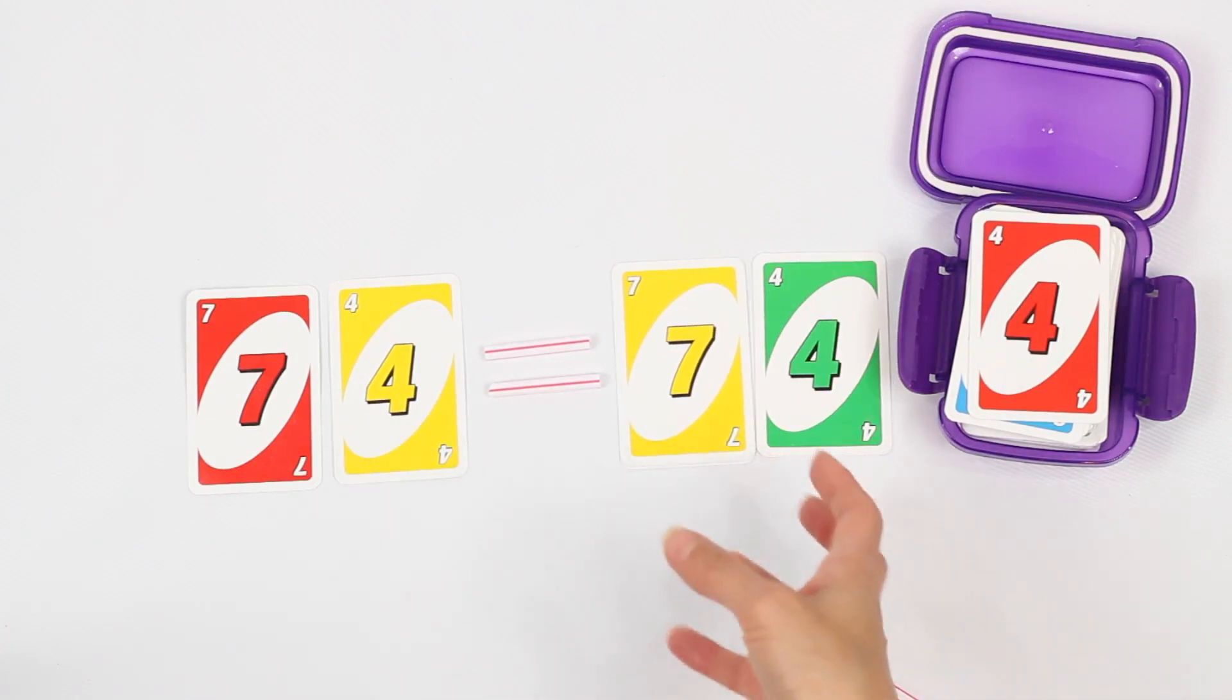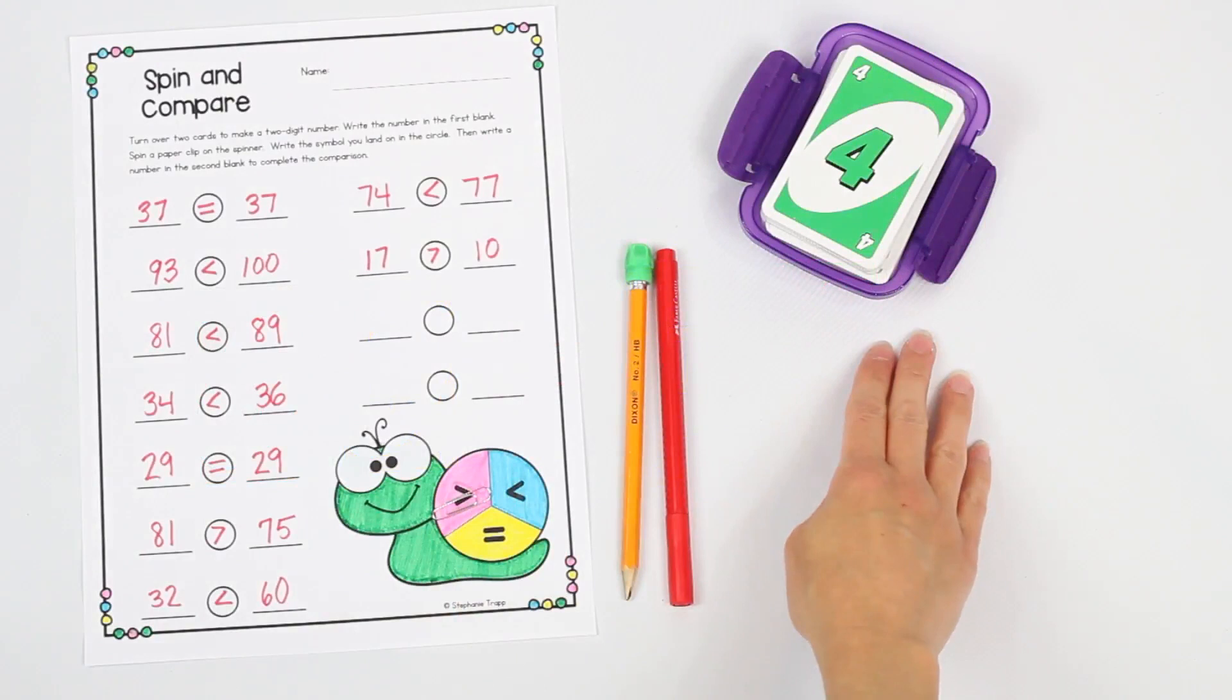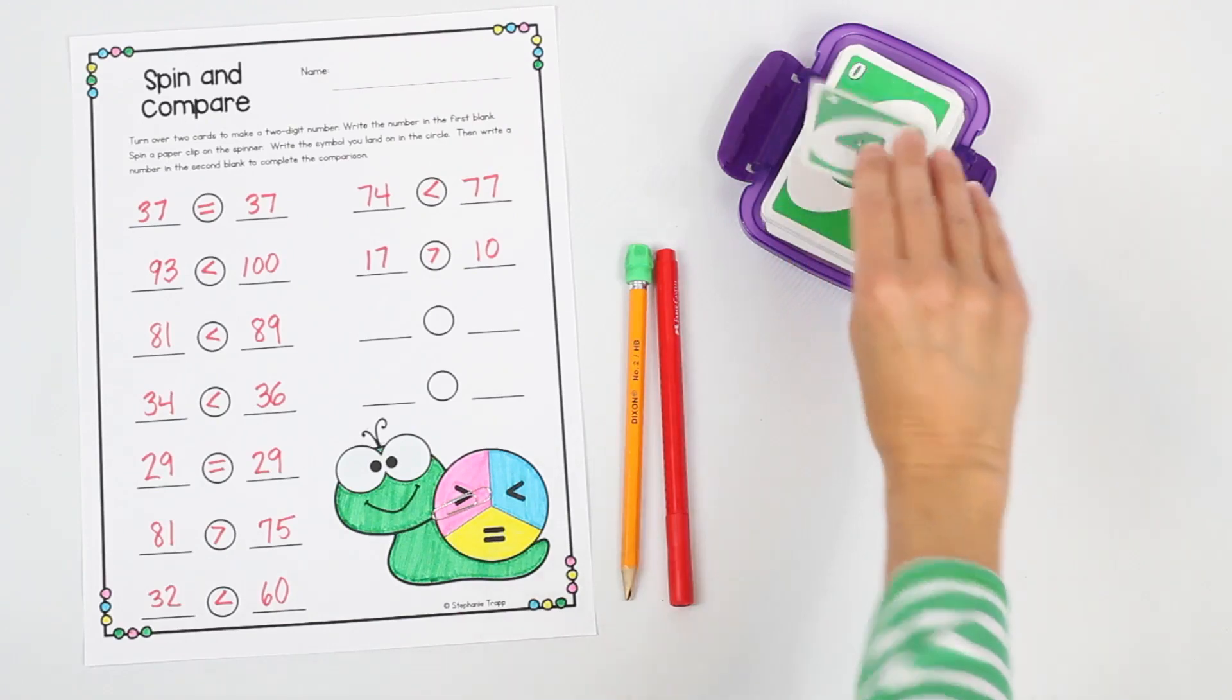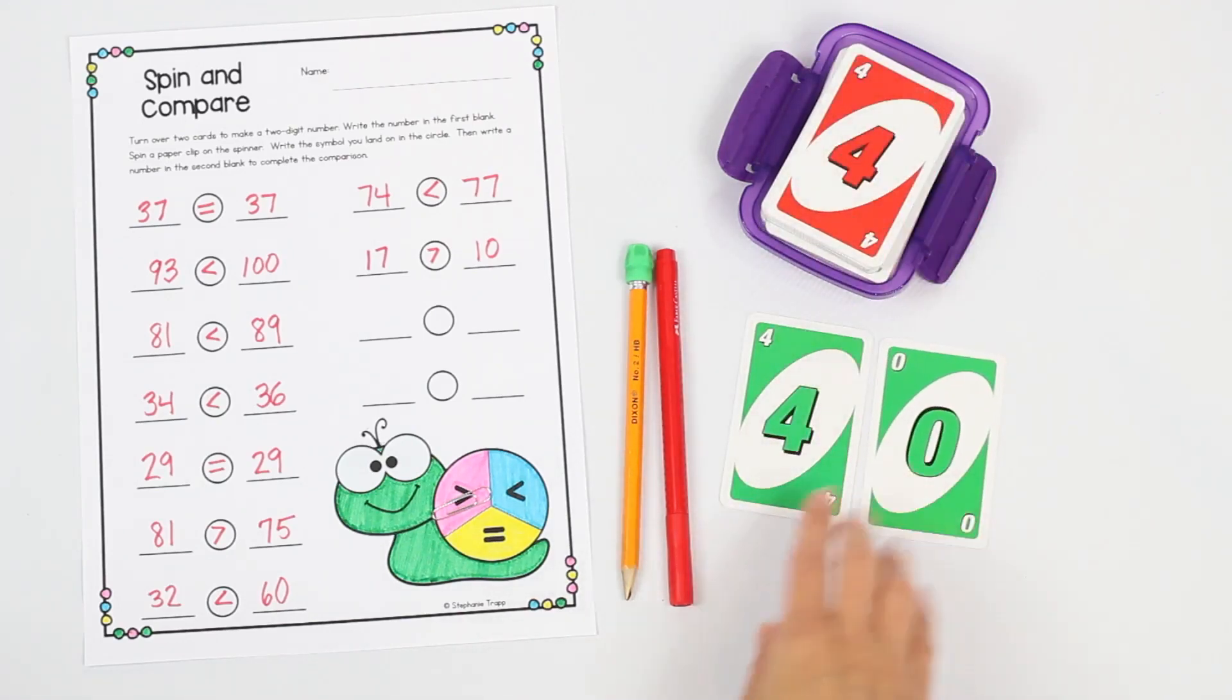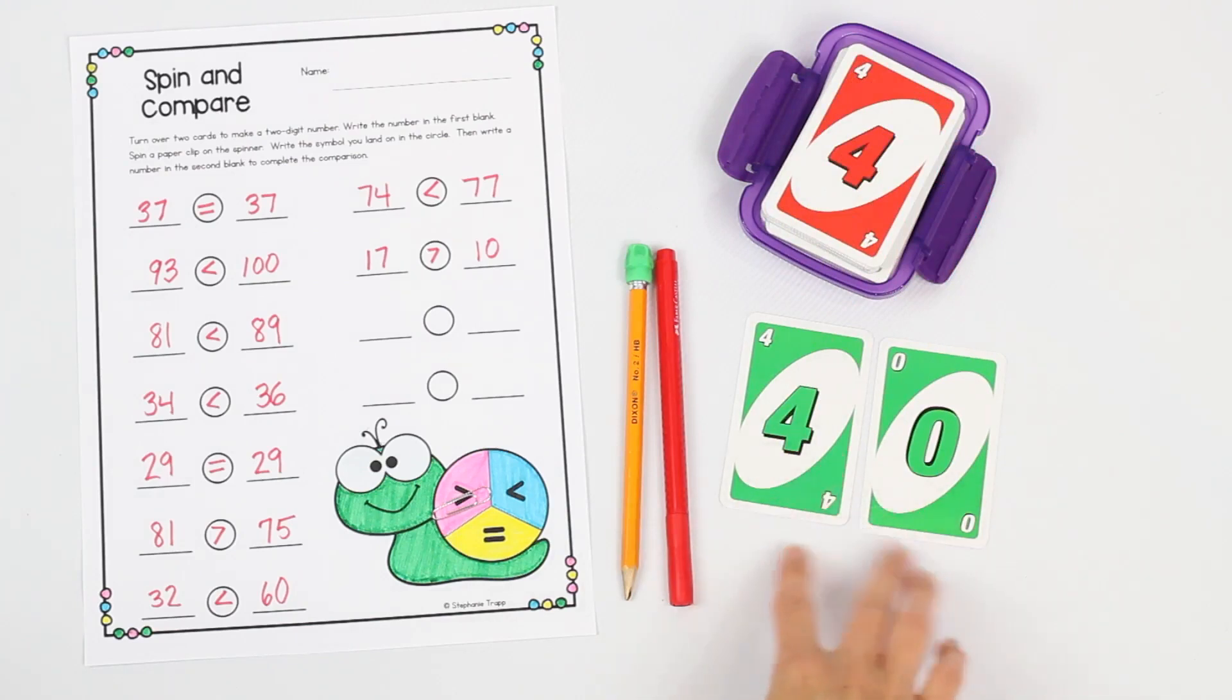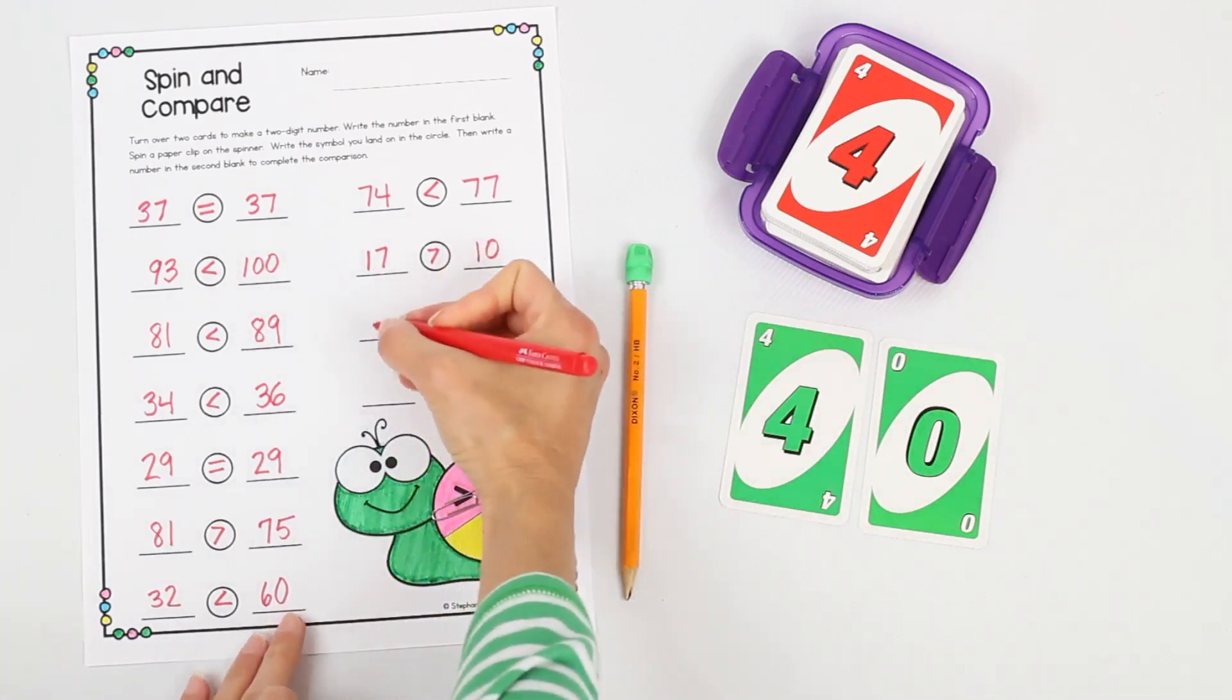You can also use your number cards to create a fun comparison game for your students to play. This makes a really great math center or an activity for your early finishers. You start out by having students draw cards to create numbers. Easily differentiate this activity by having them draw one, two, or three cards to make one, two, or three digit numbers. And then they record the number that they've made.